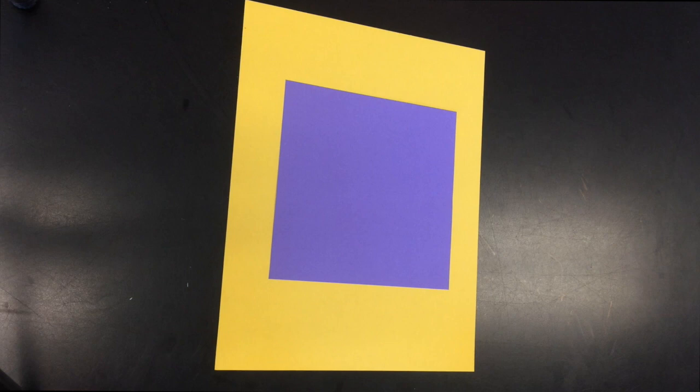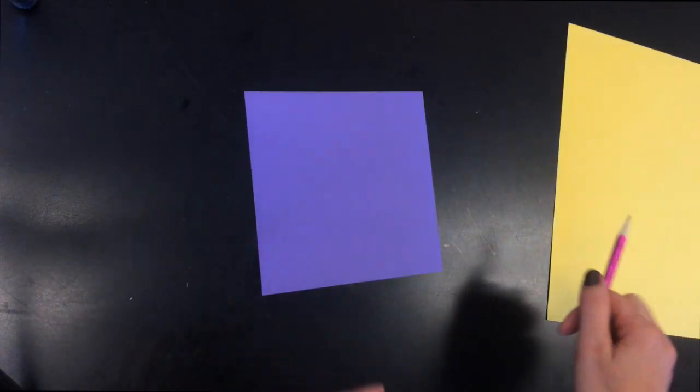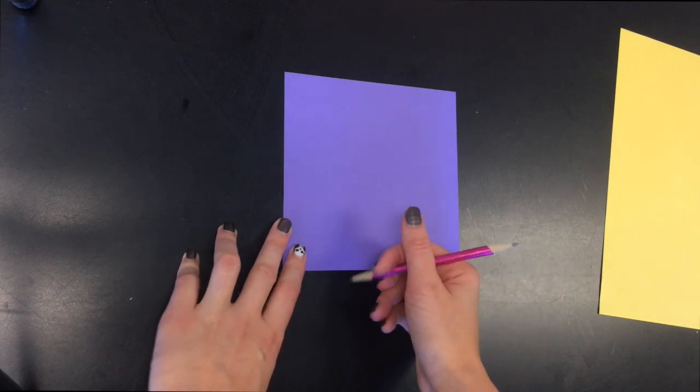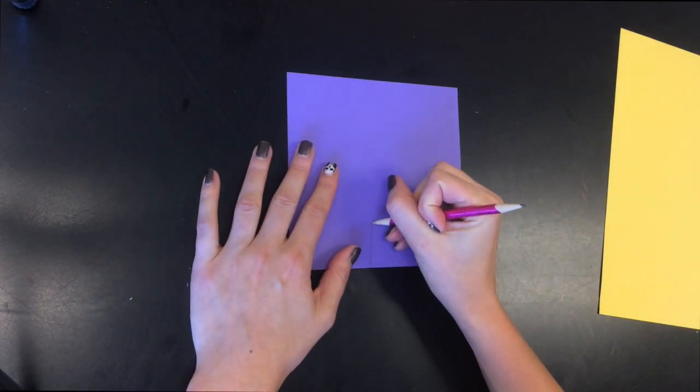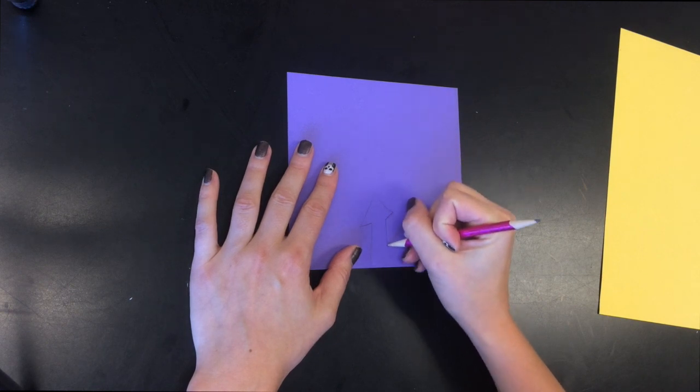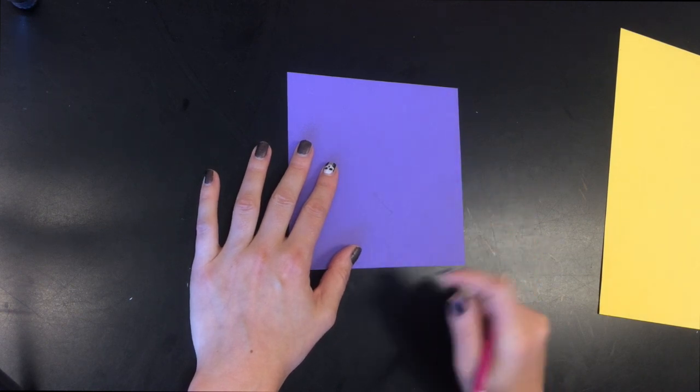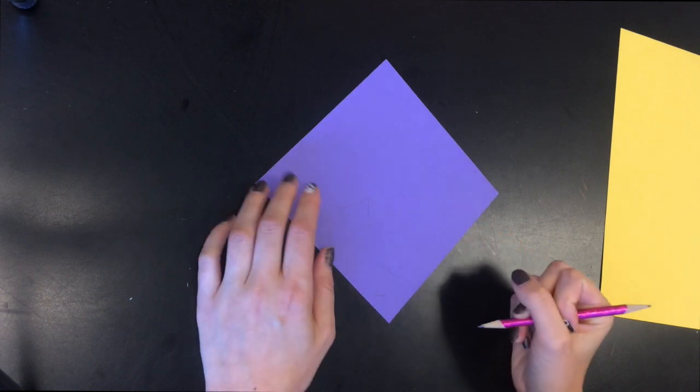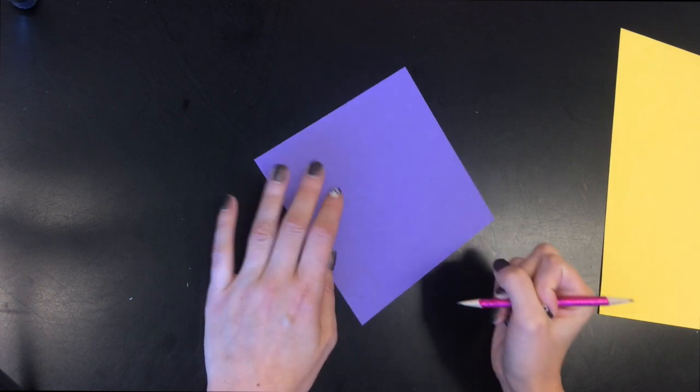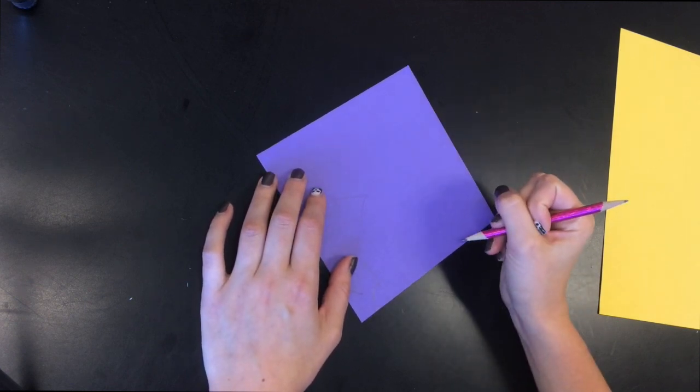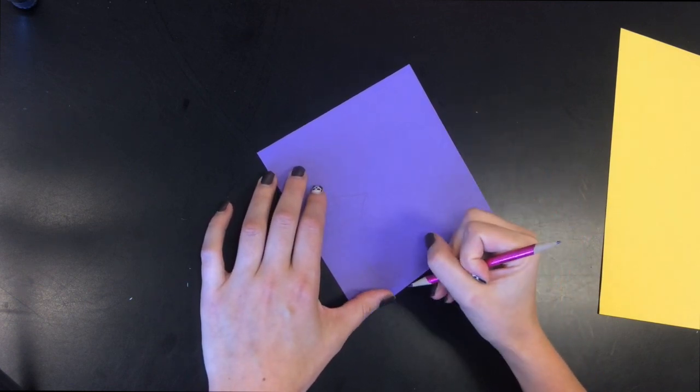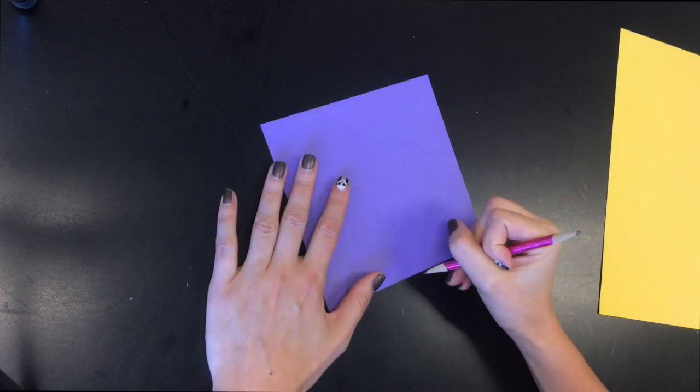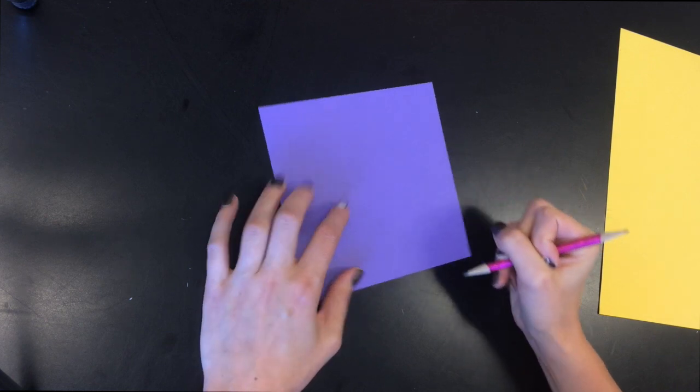And what I'm going to do is I'm just going to use the violet and I'm going to draw designs on this violet piece of paper. Making sure that where I draw them, let's say I'm going to draw an arrow, that they start and stop at the end of the paper. You cannot have these designs in the middle of the paper. Have them all touching the end. Because if you do it in the middle of the paper, you're going to make it a lot more complicated for yourself than it needs to be.